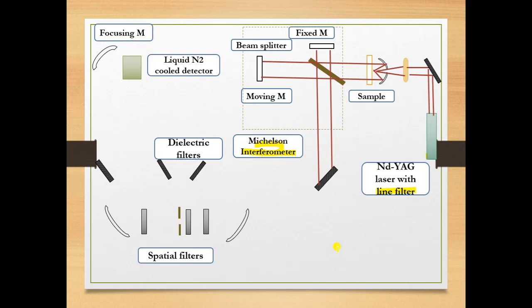After that, this radiation passes through the filters. Firstly, it will pass through the dielectric filter, and then it will come to the special kind of filters. What is the role of the special filters and dielectric filters?